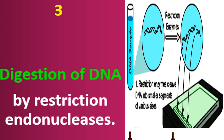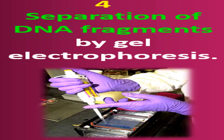The third step is digestion of DNA by restriction endonucleases. Restriction endonucleases are enzymes that cut DNA at specific sites, making fragments of DNA — this is called digestion of DNA. You can see the isolated DNA sample here; the restriction enzyme is used to make these fragments.